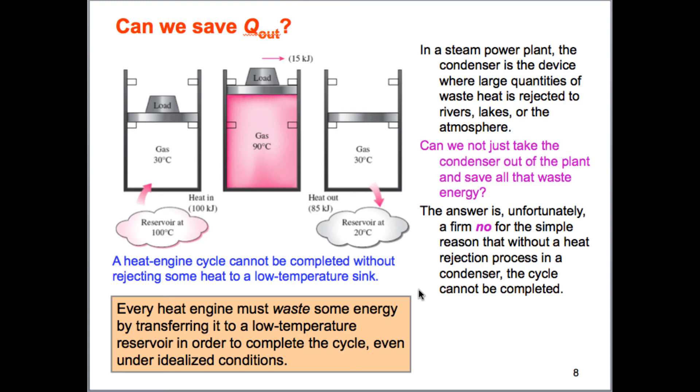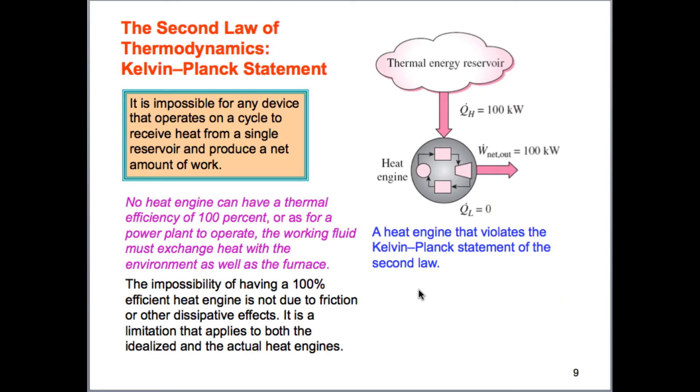So, that brings us to the Kelvin-Planck, or Kelvin-Planck statement, that we are saying that it is impossible for any device to operate in a cycle and to receive heat from a single source and produce a net amount of work. So, this would be something that violates the Kelvin-Planck statement, that we get 100 kilowatts of energy from this high-temperature source, and we're able to use all of it. We have to be able to expel some of it in order to operate in our cycle.